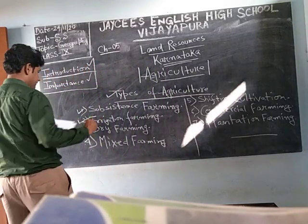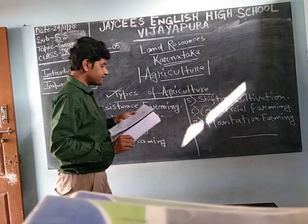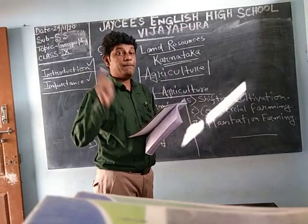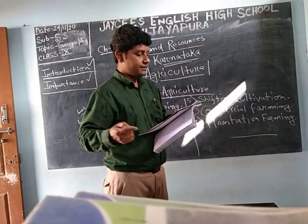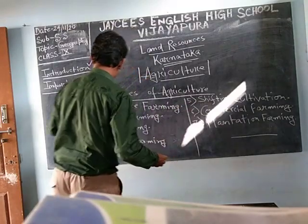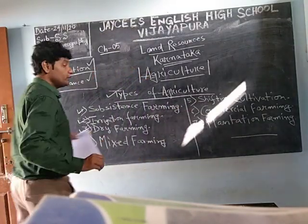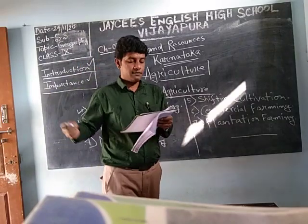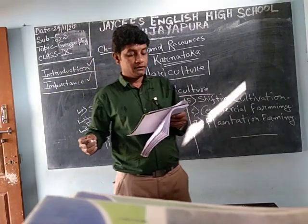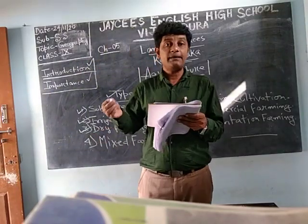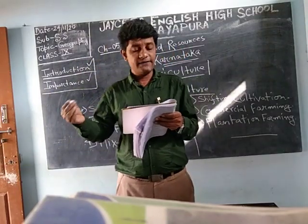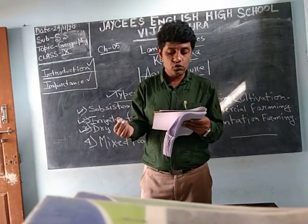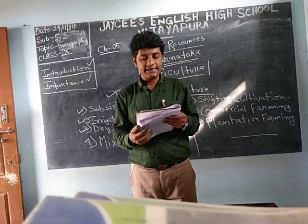Next is dry farming. Cultivation of crops which depends mainly on rain is called dry farming. In such places, no irrigation facilities are available. Examples include ragi, joar, oilseeds, etc.